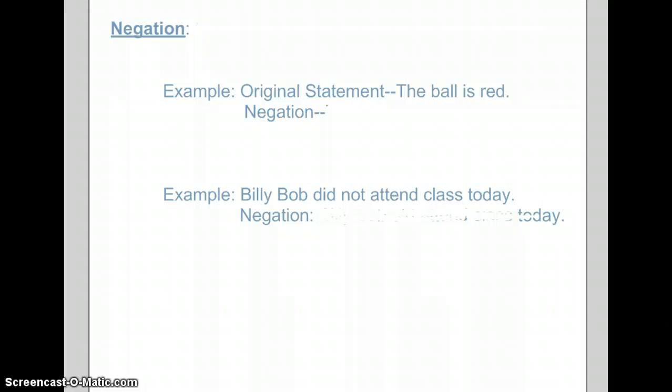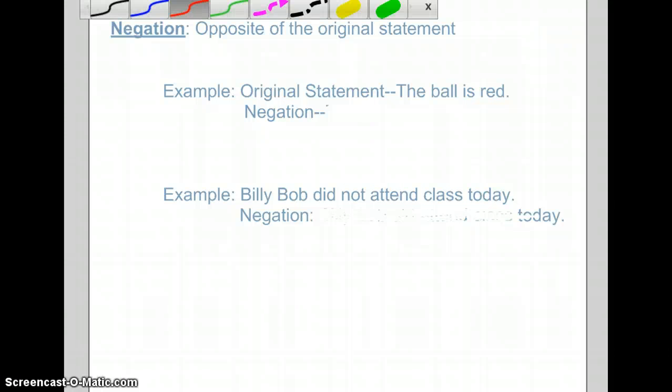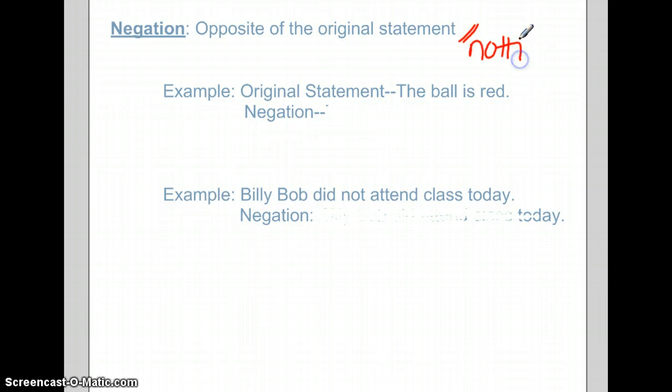So negation. Now, negation is something we need to be careful with because a lot of people misunderstand this. Negation is the opposite of the original statement. A lot of people associate negating something as notting something. For example, the original statement is the ball is red. The negation is the ball is not red. This is why a lot of people associate negation with notting something, because we took an original statement and said the ball is red, and we made it not. However, all we really did was take the opposite of the original statement.